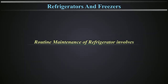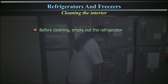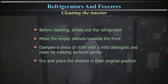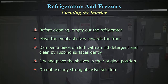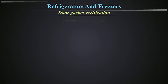Routine maintenance of a refrigerator involves cleaning the interior. Before cleaning, empty out the refrigerator and move the empty shelves towards the front. Dampen a piece of cloth with a mild detergent and clean by rubbing the surfaces gently. Dry and place the shelves in their original position. Do not use any strong abrasive solution. The door gasket verification should be performed every 3 to 6 months.